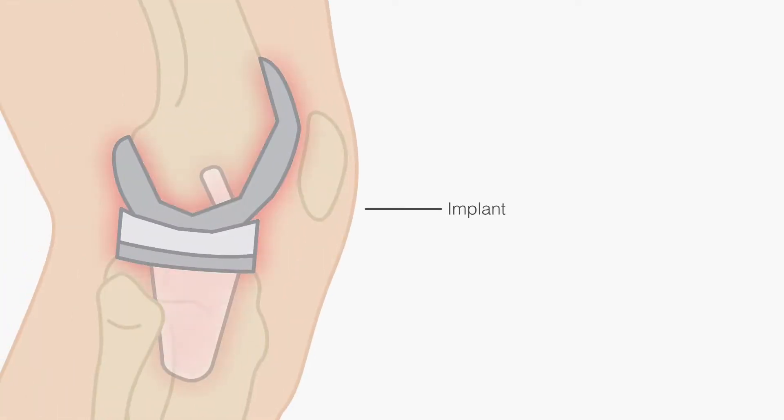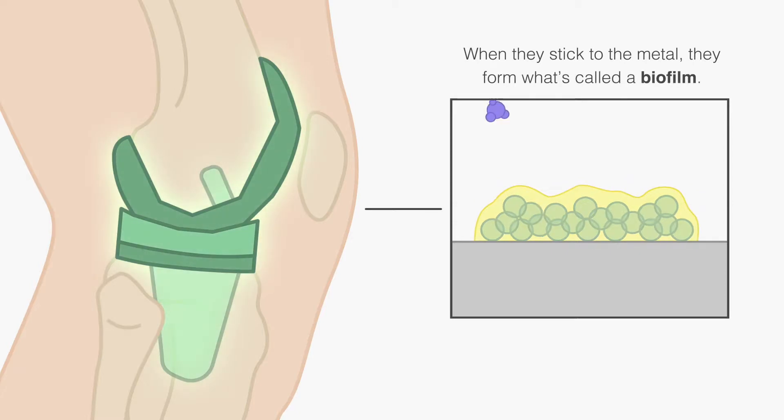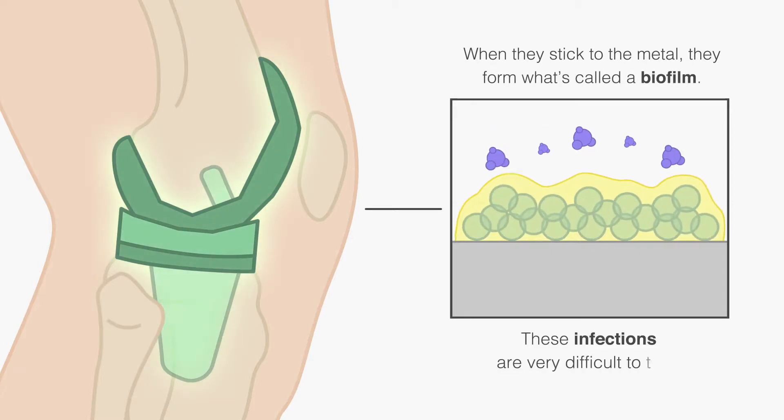One of the problems with these implants is sometimes they get infected. And when they get infected with various organisms, not only can they cause a local infection, but they can also stick to the metal themselves. And when they stick to the metal, they form what's called a biofilm. When this happens, these infections are very difficult to treat.